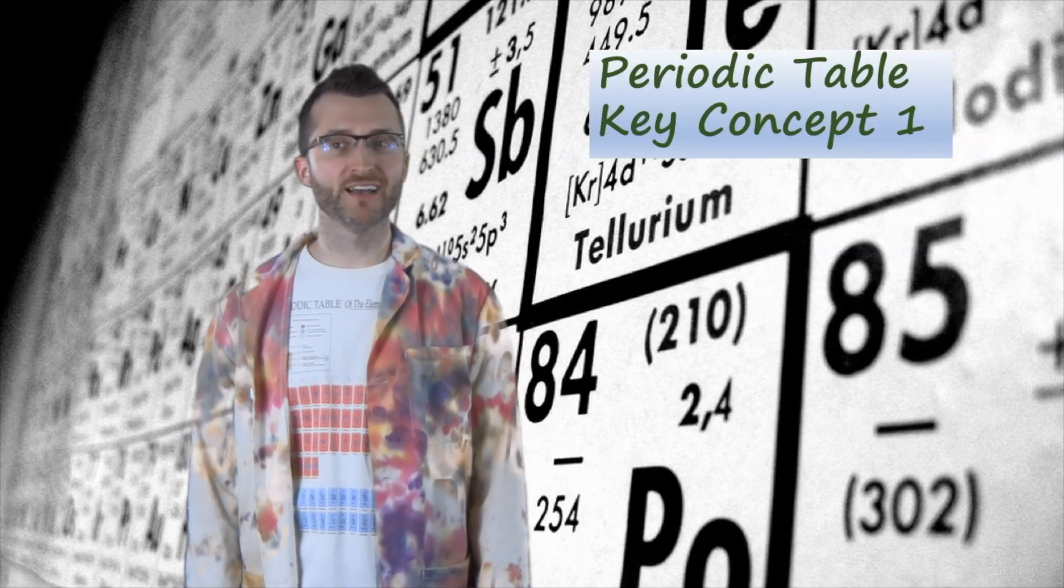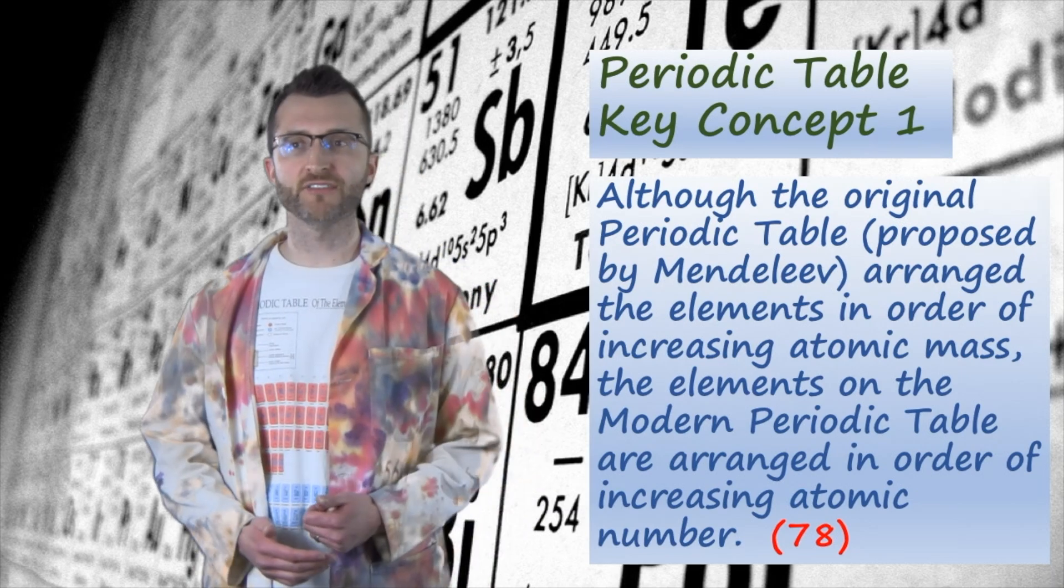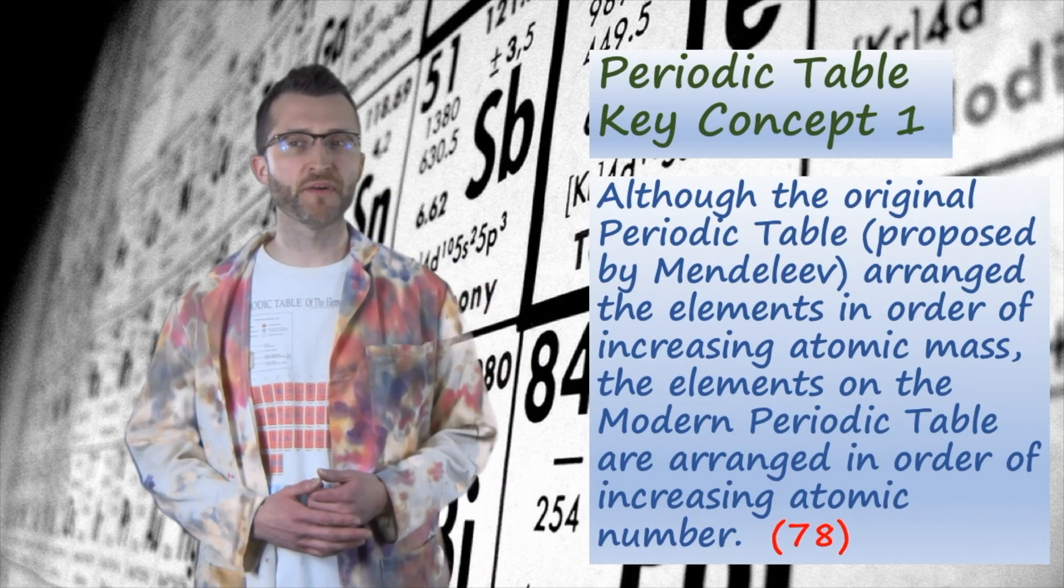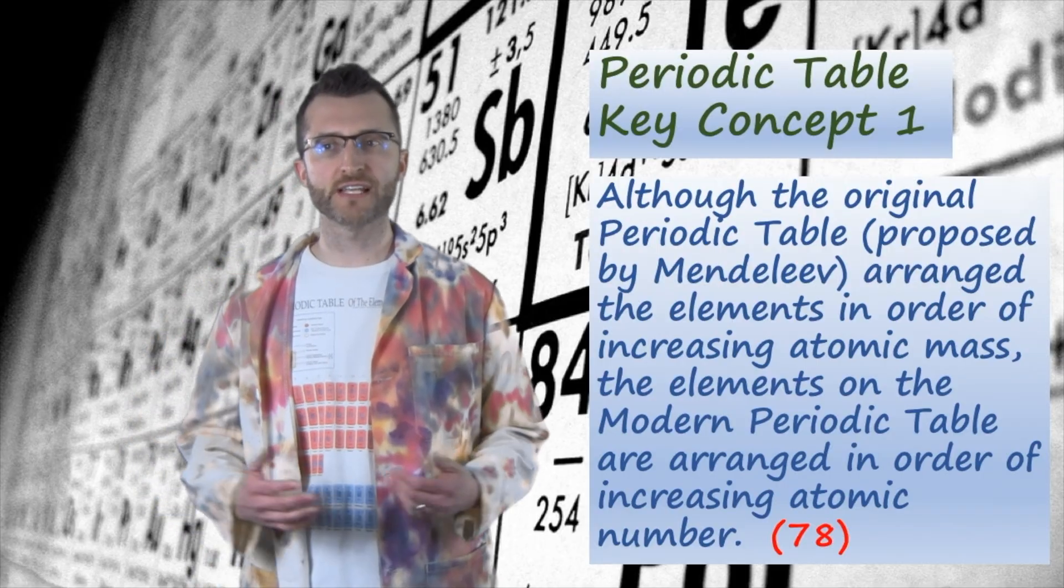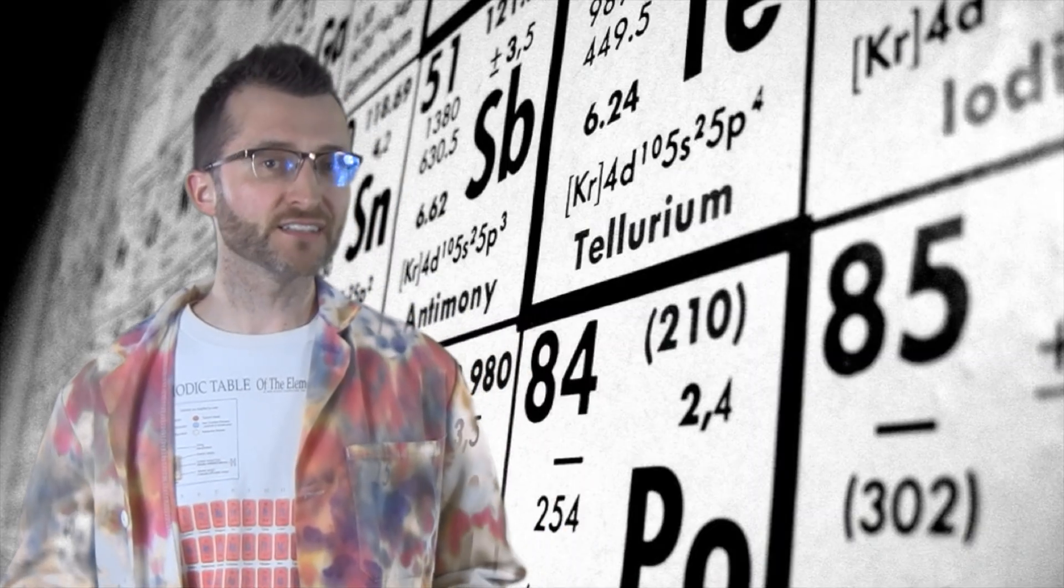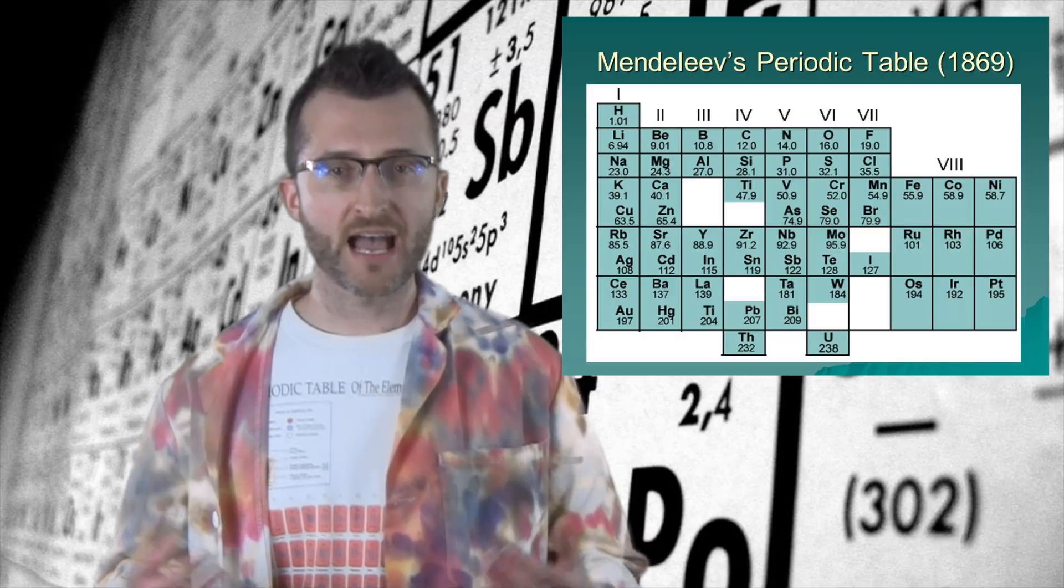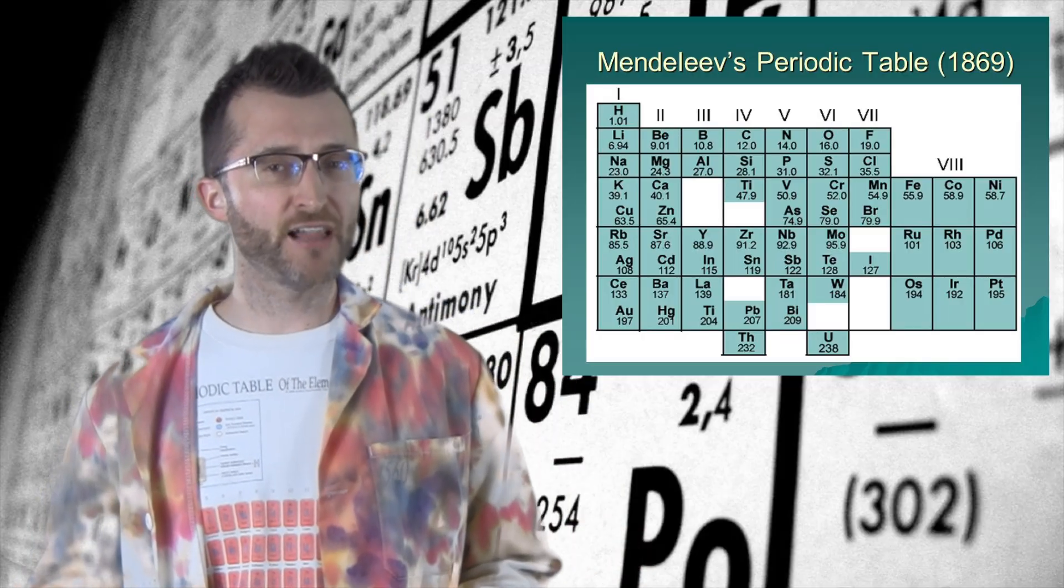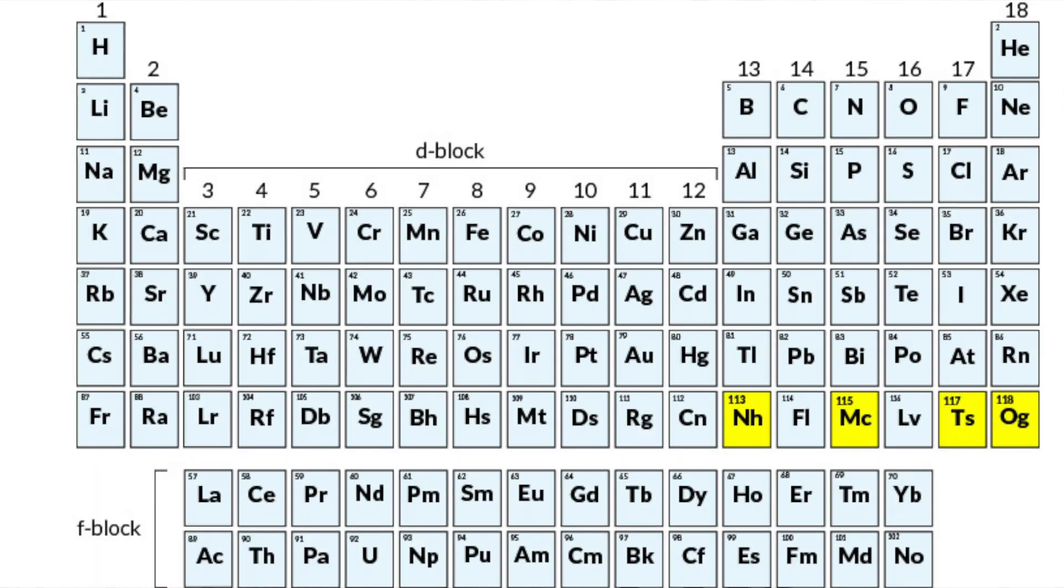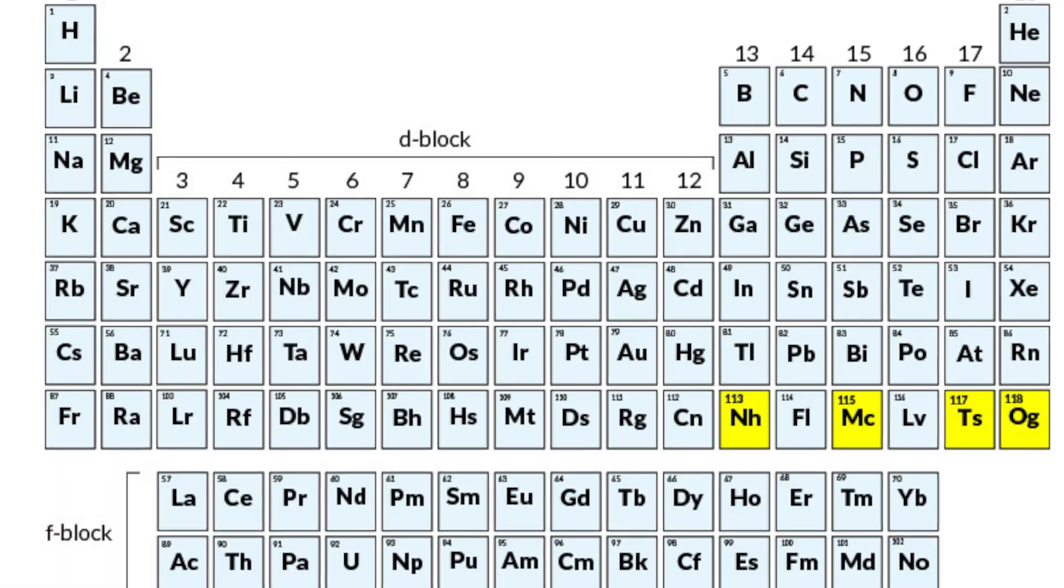Periodic Table Key Concept 1. Although the original periodic table proposed by Mendeleev arranged the elements in order of increasing atomic mass, the elements on the modern periodic table are arranged in order of increasing atomic number. We consider Mendeleev to be the father of the modern periodic table. However, he arranged the elements on his table in order of increasing atomic mass. On the modern periodic table, we arrange elements by increasing atomic number.